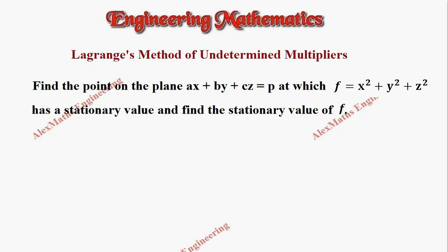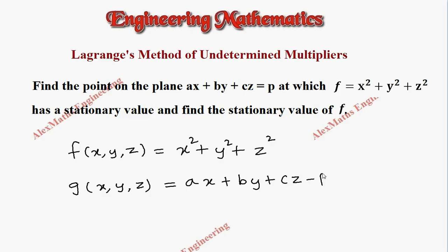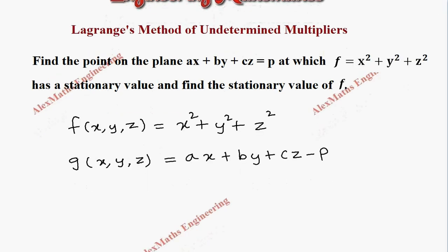The given function f is in terms of x, y, and z, so f(x, y, z) is x square plus y square plus z square. And g(x, y, z) is the plane equation ax plus by plus cz minus p, taking p to the other side. Now we have to write the auxiliary function.